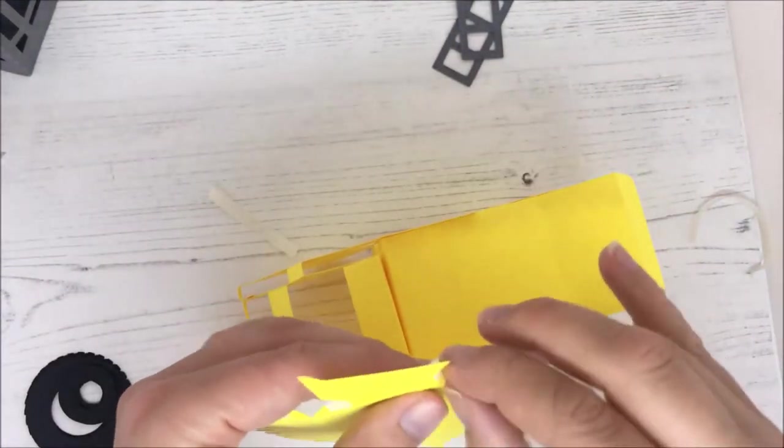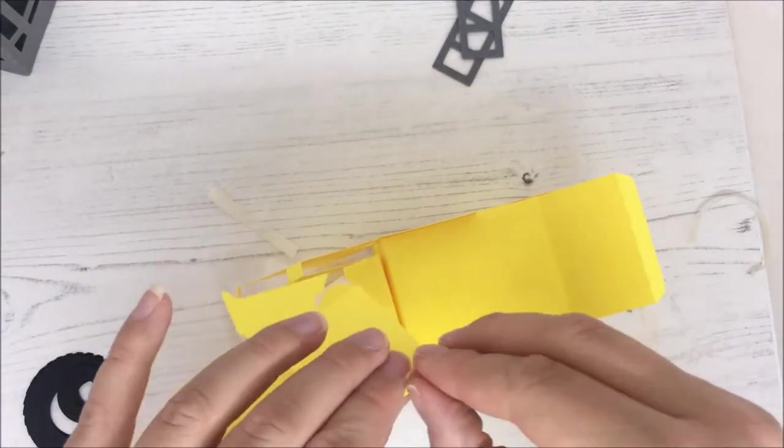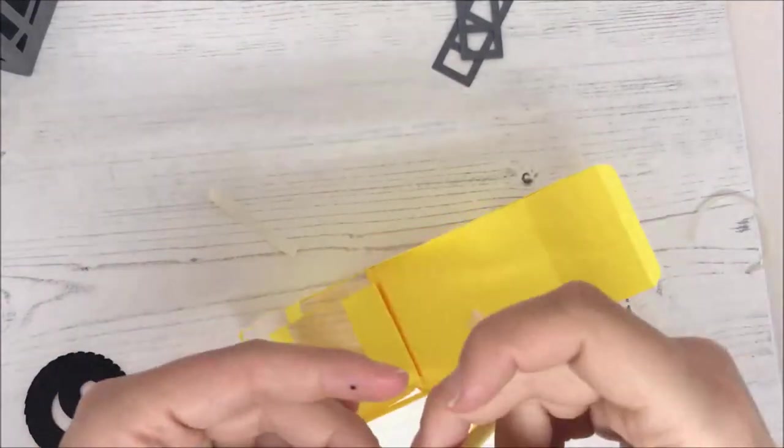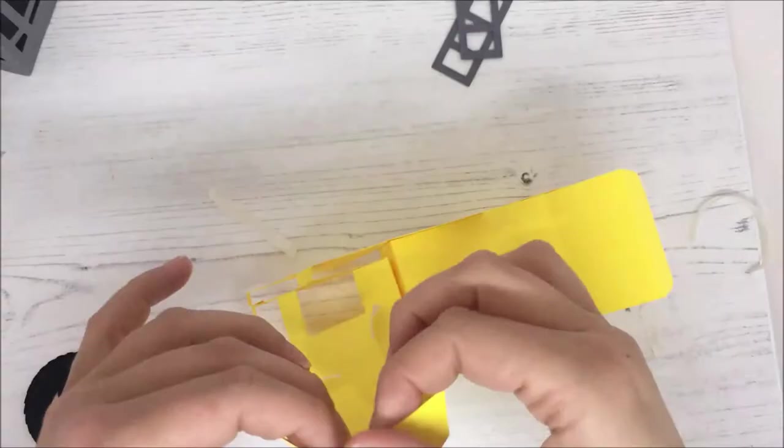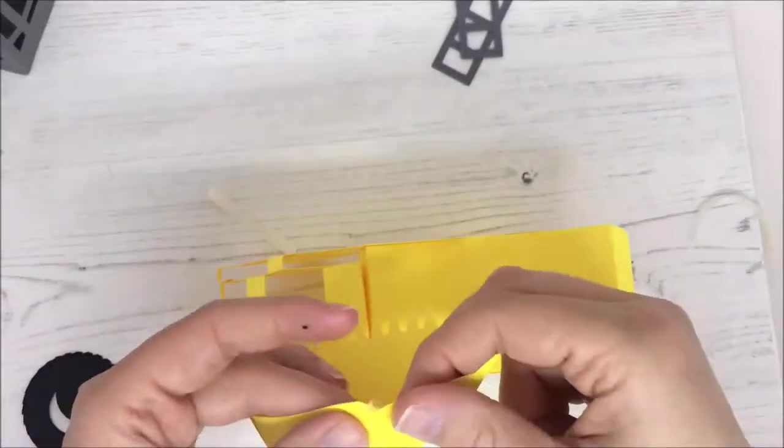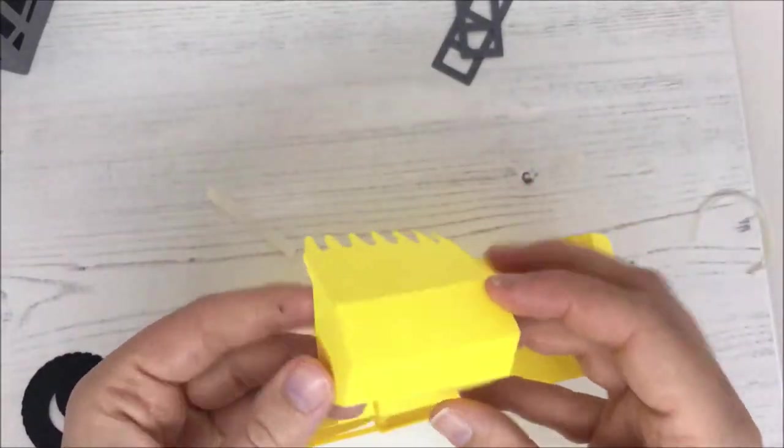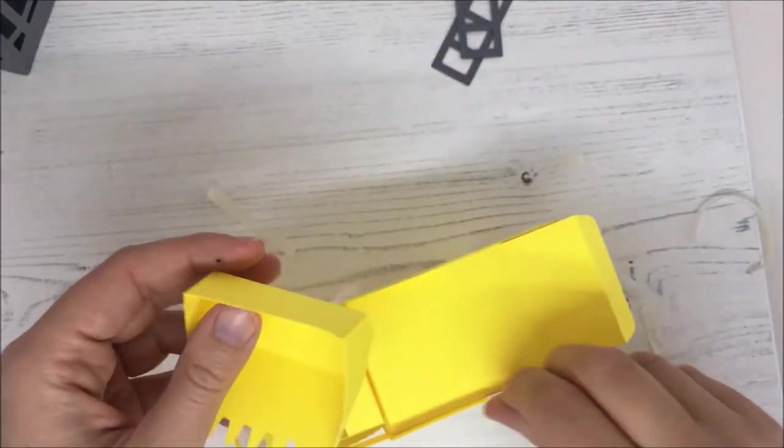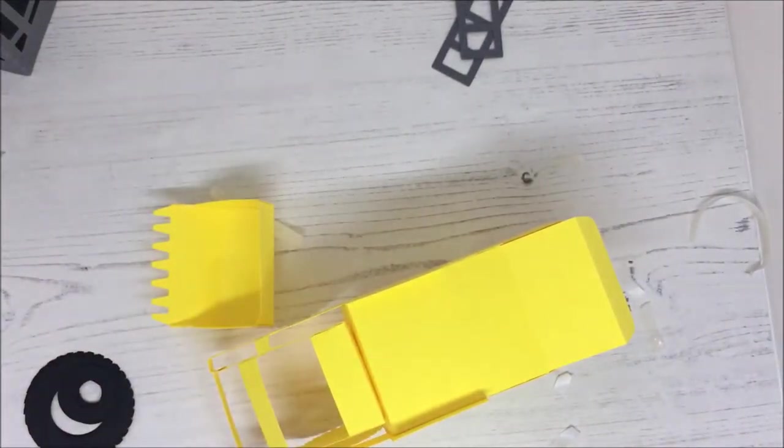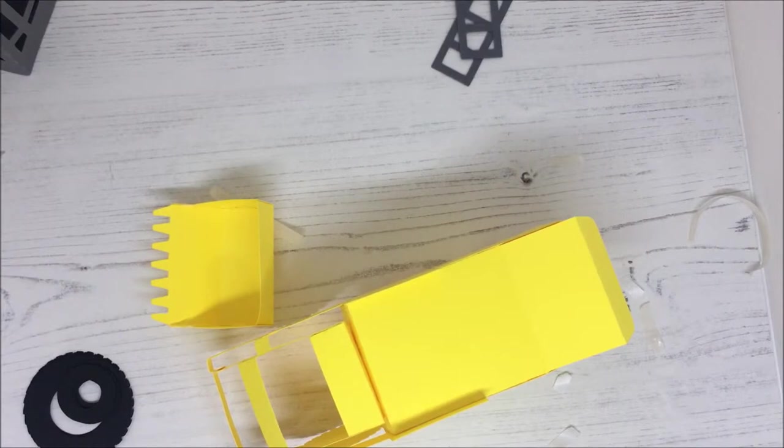And now I'm just going to put the bucket part together and that is super simple. There we go. And then this part just glues onto the front of the digger.